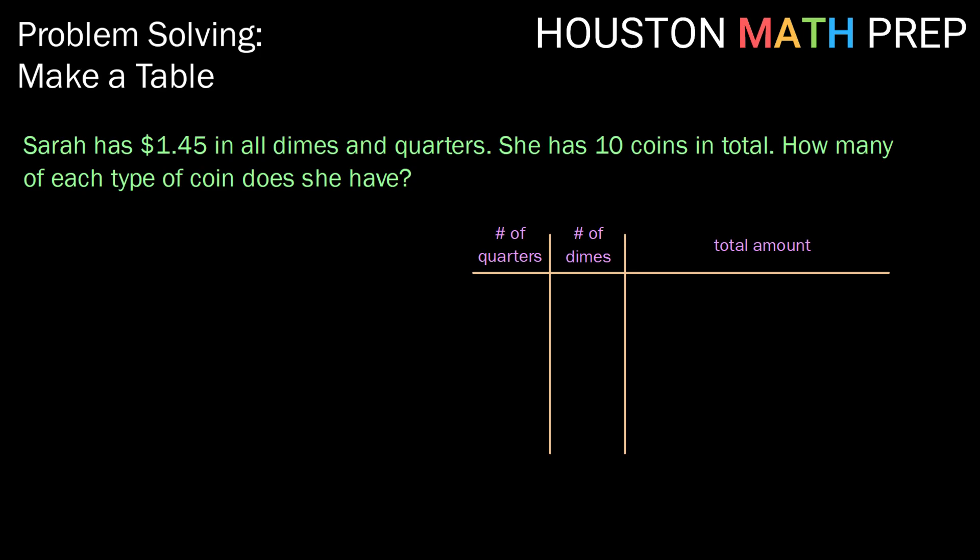Now, knowing that she has 10 coins in total, we need to make sure that the number of quarters and the number of dimes adds up to 10.